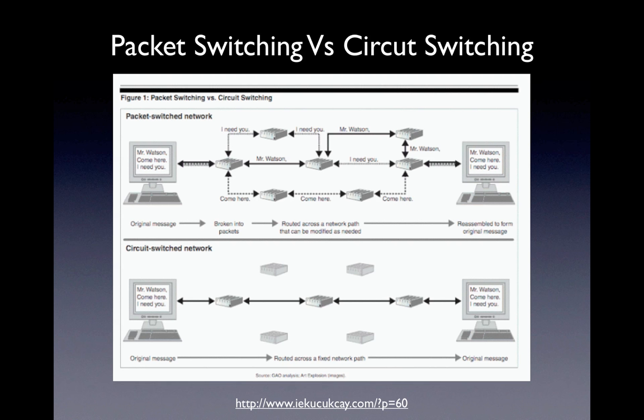So this networking already exists in the phone network. The idea of packet switching was to have a source computer and a destination computer, and once you've established a connection between those computers it doesn't really care which direction it takes through the network. So if part of the network is severed or blown out, the information can find another way around that without having to restart the communication.